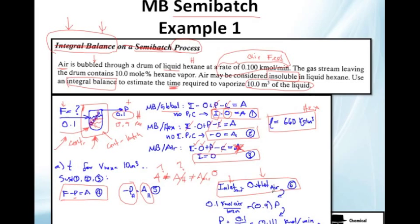Equals to the outlet of air. You don't know the outlet of air, but you can calculate it. You know that 90% of P is air. Why? Because 0.1 is hexane, so the rest, the other amount must be air. So 0.9 is air.